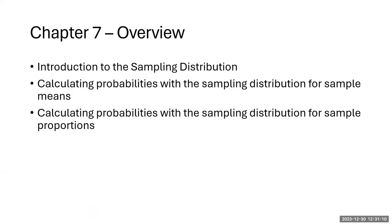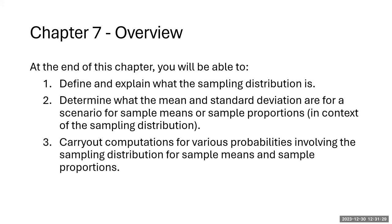We are going to look at an introduction to the sampling distribution, and then do some computations with probabilities for both the sampling distribution for sample means and the sampling distribution for sample proportions. At the end of this chapter, you should be able to define and explain what the sampling distribution is, determine the mean and standard deviation for sample means or sample proportions, and carry out various probability computations.